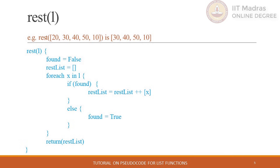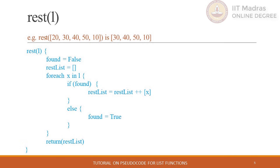Rest is a special function which always returns a list. This list will contain all the elements from the original list except the first element. It can also be represented as: rest of L equals L minus first of L. In the pseudo code we will maintain an empty list called rest-list, which we will use to store the output of this rest function.